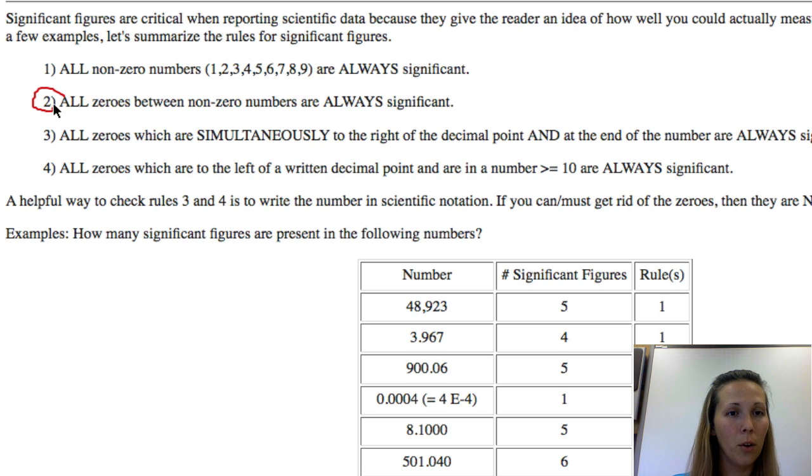Rule number two, any zero that is between two non-zero numbers. So if you have 503, that zero is significant.